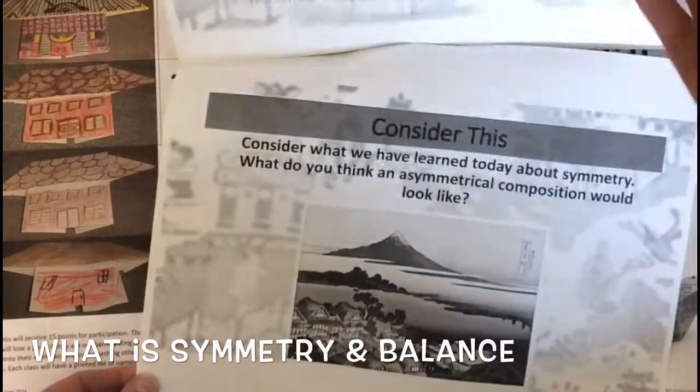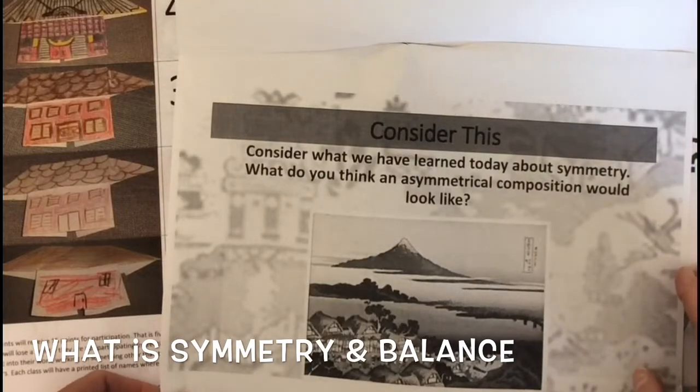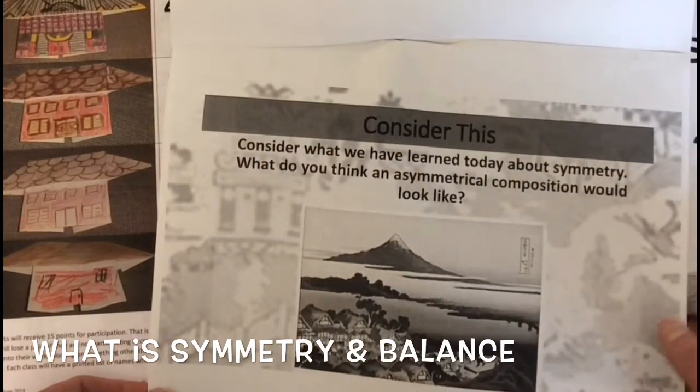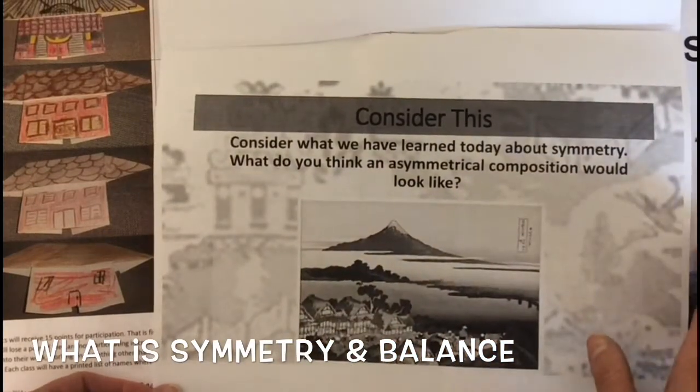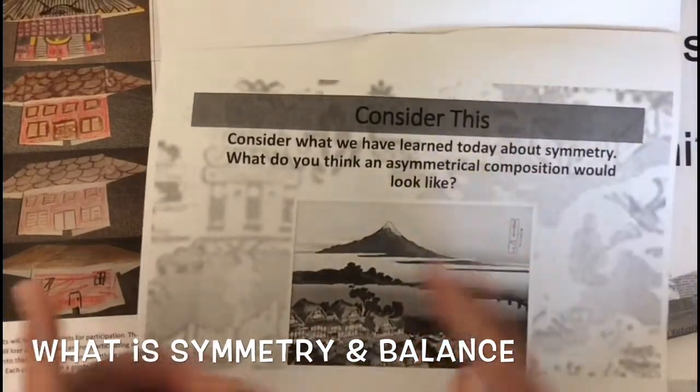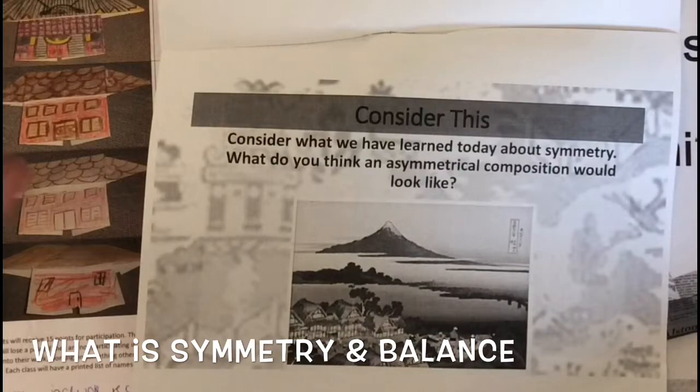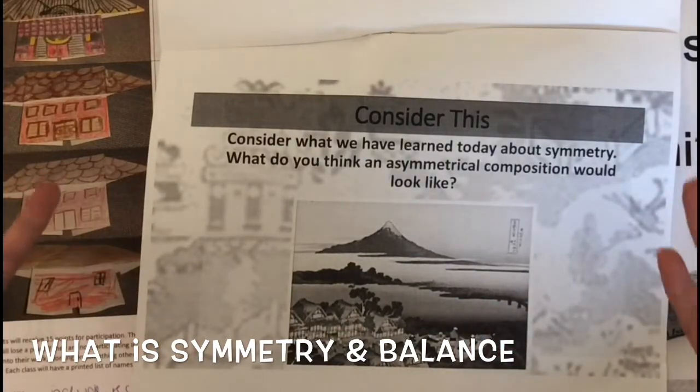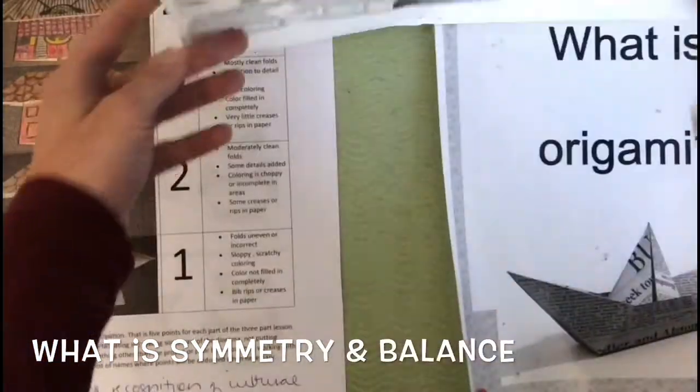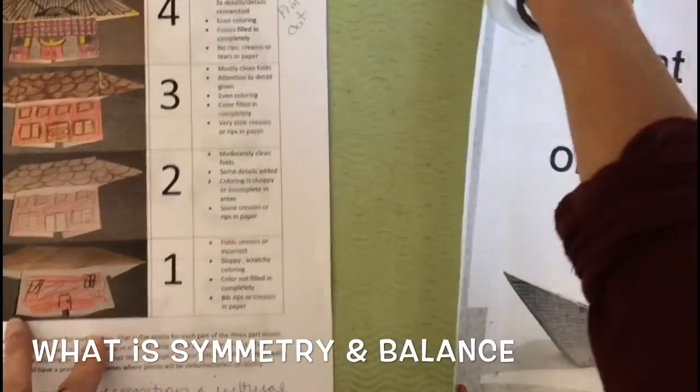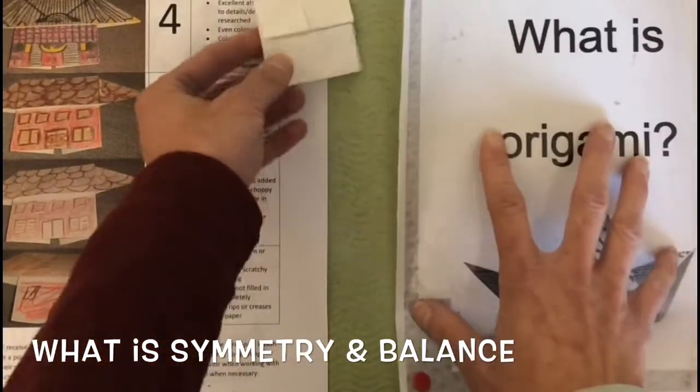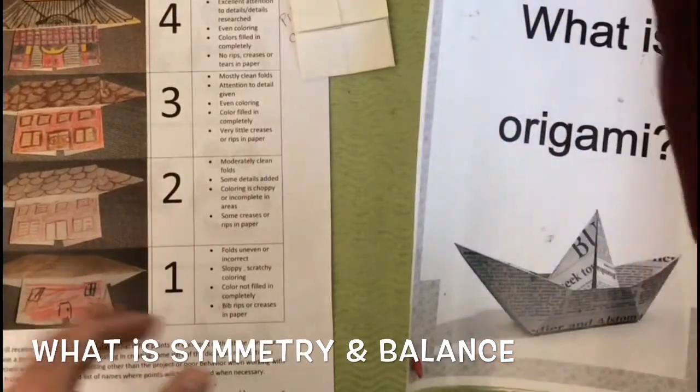Before we get started on making our origami house, we need to think about what we know about Japan. What have we learned about symmetry and Japan so that we can make our village look like it's actually in a Japanese landscape? The element of art we're using in this project is called space.